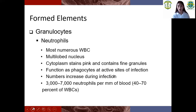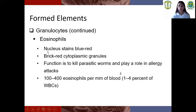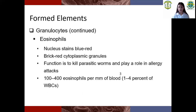So the next one is eosinophils. Eosinophils have a nucleus that stains blue-red, with brick red cytoplasmic granules. Their function is to kill parasitic worms and play a role in allergy attacks. Normal range is 100 to 400 eosinophils. Eosinophils are involved in allergic reactions or cancer.